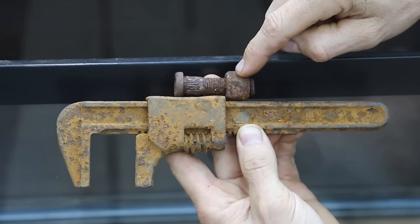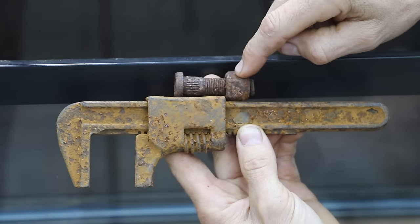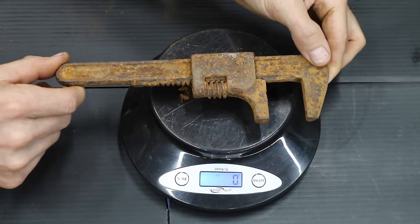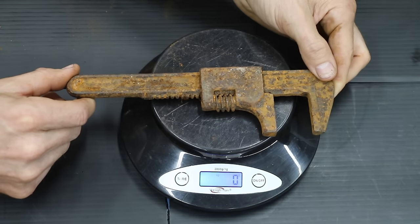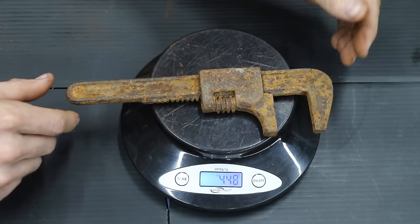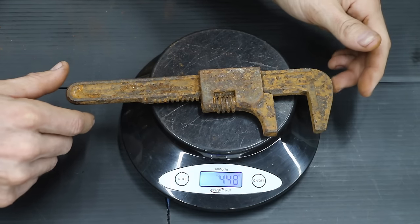This rusty wrench and this lug nut are both seized. We're going to see if electrolysis can remove all the rust and free both of them up. We want to see how much weight is removed from this wrench during the electrolysis process. It weighs 448 grams. We'll weigh it again after the electrolysis to see how much weight was removed.